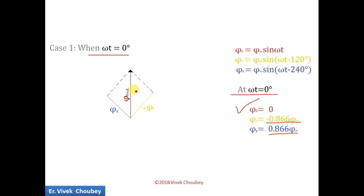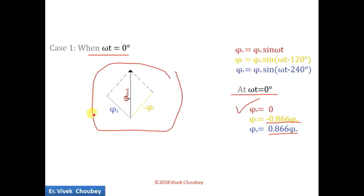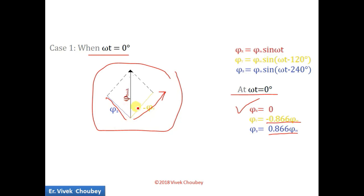So φR is 0, meaning it has no value and does not appear in the diagram. φY is −0.866φm — the negative sign means it is in the opposite direction to φm, so φY points in the opposite direction. φB is positive, so φB is in the normal direction. Since these two are vectors, we vectorially add them, and the resultant is shown by the black arrow. This is the resultant air gap flux at ωt = 0°.